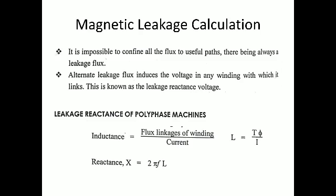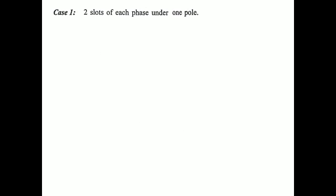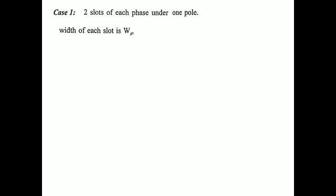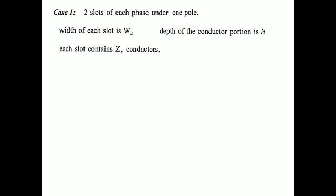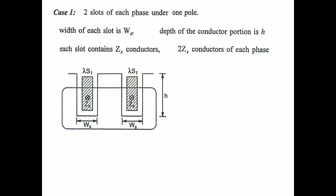For this consideration we have two cases. Case 1: two slots per phase under one pole — meaning one pole has two slots. The descriptions are: Ws is the width of the slot, H is the depth of the conductor, and Zs is the number of conductors per slot. This means there are 2·Zs conductors per phase. This is the diagrammatic visualization of two slots per phase under one pole.